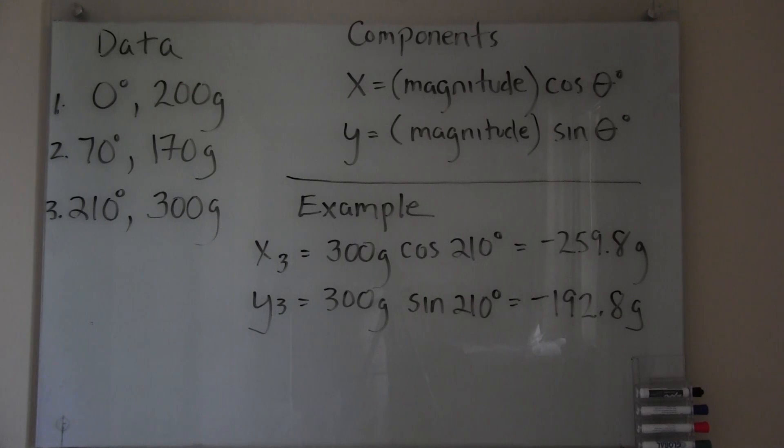For the x component, you have the magnitude times the cosine of the angle. For the y component, you have the magnitude times the sine of the angle. I have done an example for you on the bottom. I chose the third vector because it lies in the third quadrant, and both the sine and the cosine will have negative values. It's very important to make sure you know where your vector lies so you can get the signs correct.